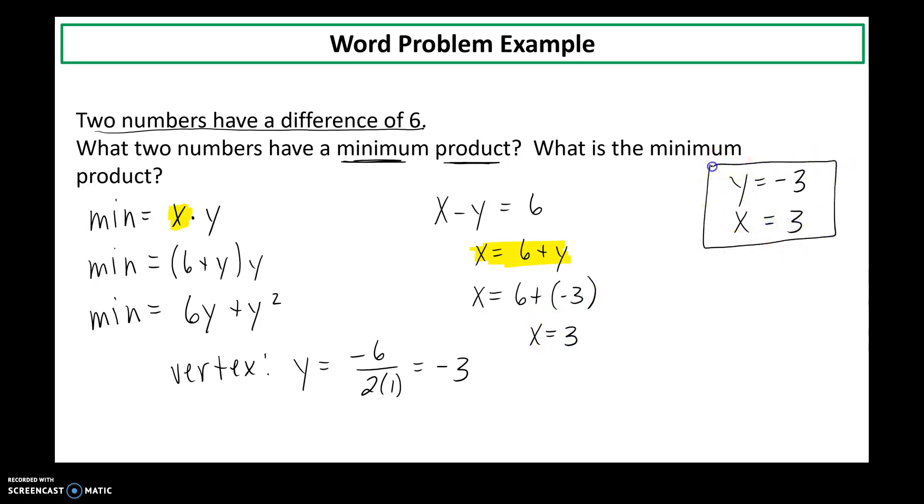So these two numbers have a difference of 6 and a minimum product. So then to answer what is the actual minimum product, then I go back and I multiply the values. So negative 9 is the smallest product of two numbers that have a difference of 6. We'll finish there. Please have those warm-up problems done for next class.